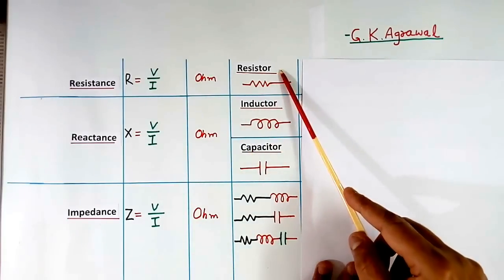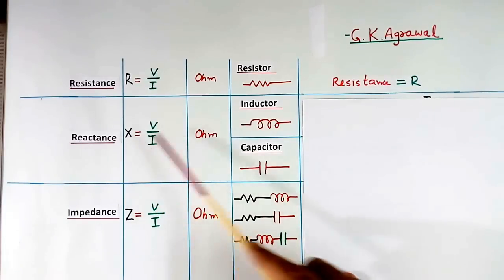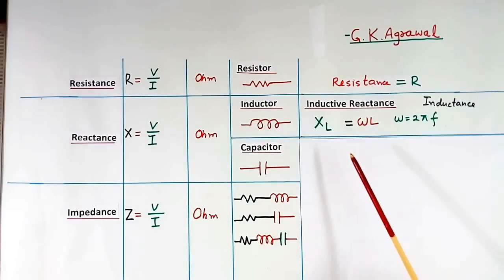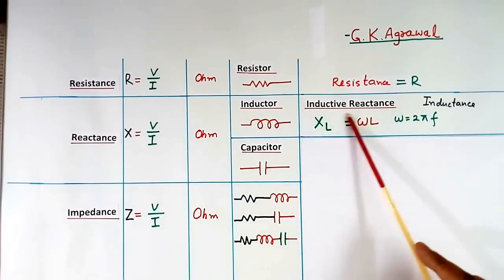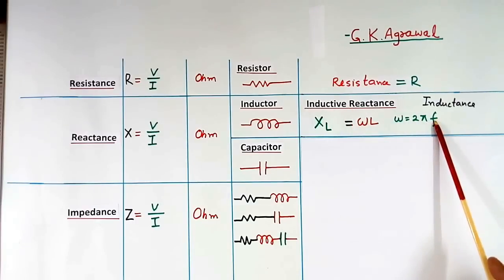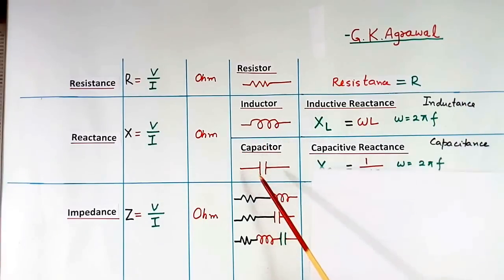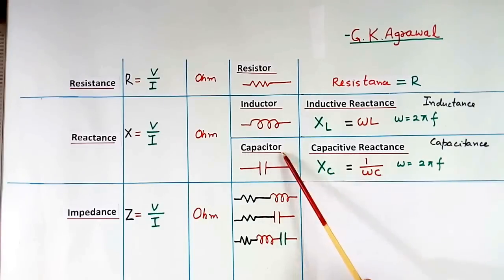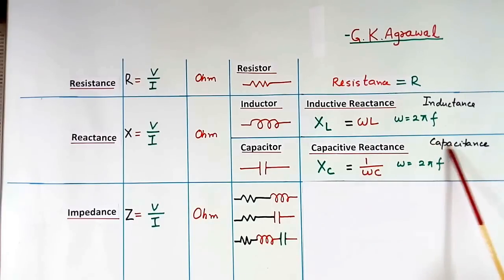In case of a resistor, the value of resistance is written as R. In case of an inductor, if reactance is made of only an inductor, then value of XL is written as omega L, and this reactance is called inductive reactance, where omega is 2 pi F and L is inductance. If it is a capacitor, then reactance is called capacitive reactance, and value is written as XC, equal to 1 by omega C, where omega is 2 pi F and C is capacitance.